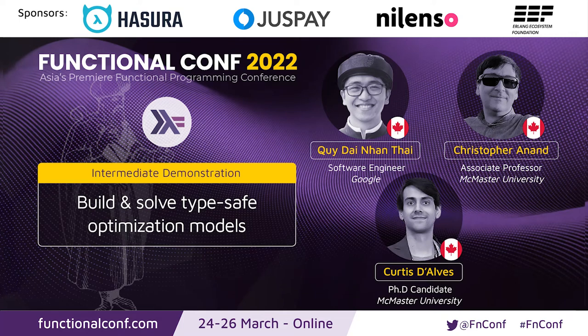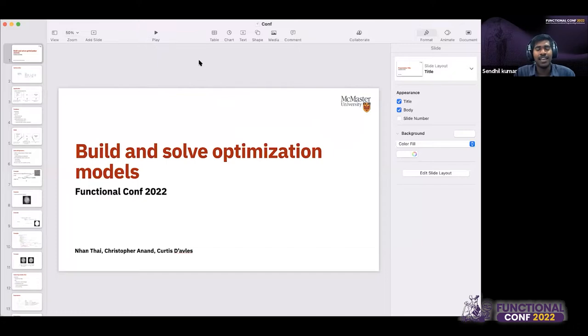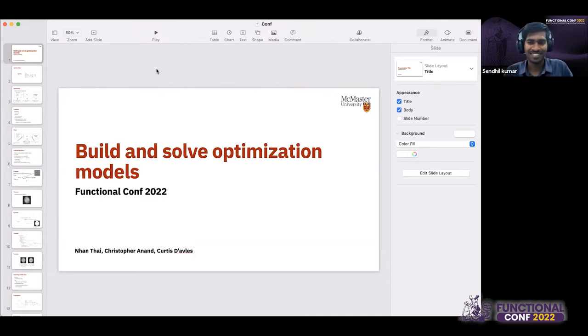Hello and warm welcome to everyone joining this session today. We have Nian, Dr. Christopher and Curtis, which we are hoping will join soon. They're with us to talk about building and solving type-safe optimization models in Haskell, which is going to be an interesting session for us all. So without further delay, over to you, Nian and Dr. Christopher.